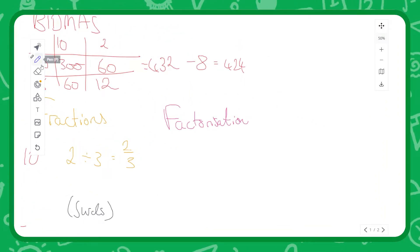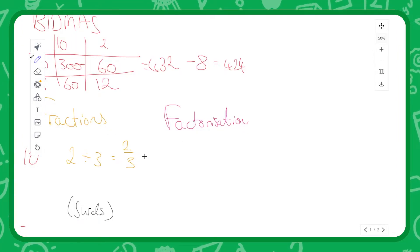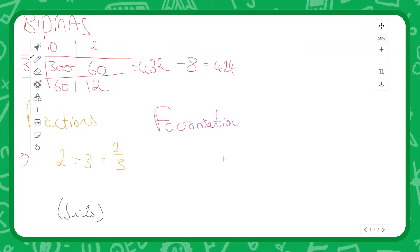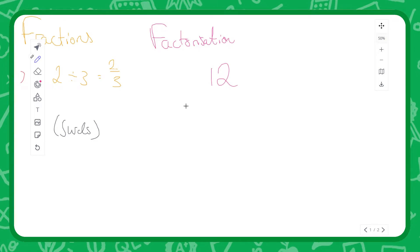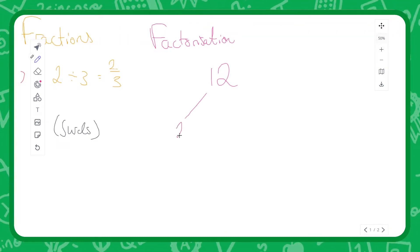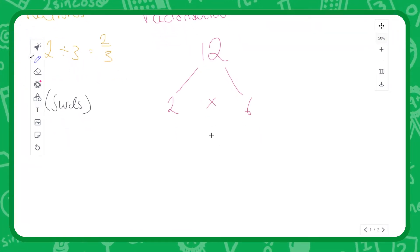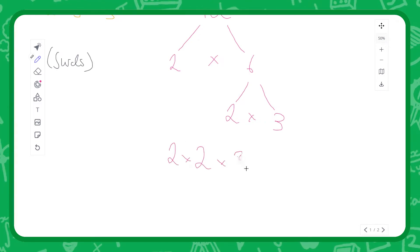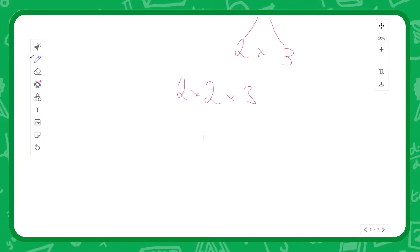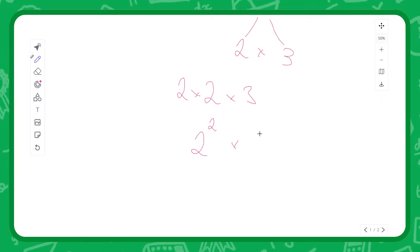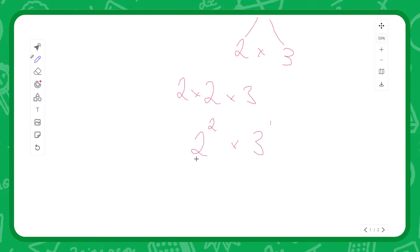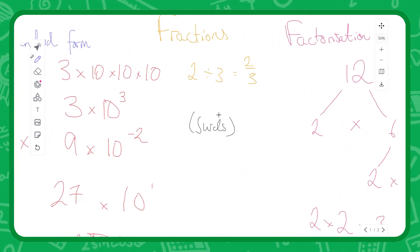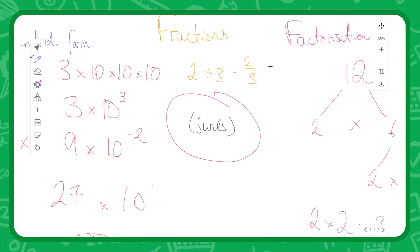The last skill I want to talk about is factorization — taking a number and breaking it down into simpler parts. Factorization actually relies quite heavily on standard form. For example, if we take the number 12: we could break it down into 2 times 6, then break 6 down into 2 times 3, giving us 2 times 2 times 3. We can simplify that further to 2 squared times 3. If we were to put that into a fraction, we might discover it can simplify further — something to keep in mind going forward.